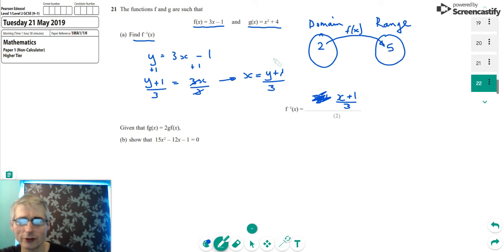If we do the inverse function, it takes us in the opposite direction. So we can see that if we started with number 5 and we added 1 to it, we'd get 6. And then if we divided by 3, it would indeed take us back to 2. And that's why it's the inverse function. It takes you back to where you started. So it's the opposite of doing the initial function.